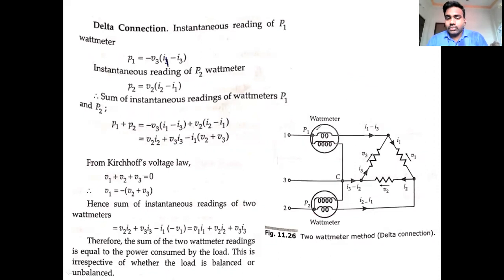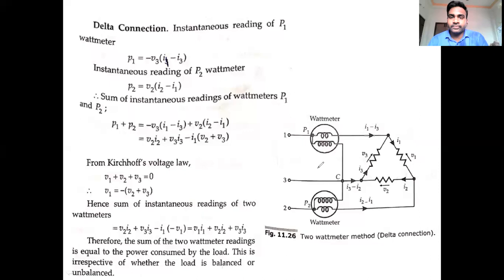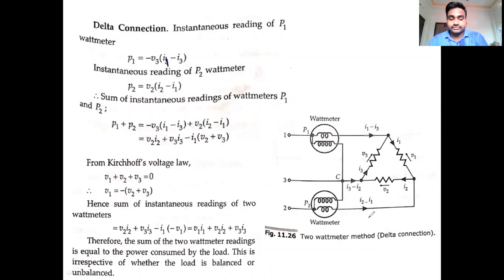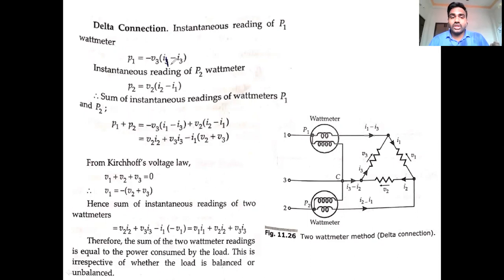In a delta connection, wattmeter 1 is connected to line 1 and wattmeter 2 is connected to line 2. The wattmeter reading for wattmeter 1 is P1 and for wattmeter 2 is P2. The current flowing through line 1 is I1 - I3, through line 3 is I3 - I2, and through line 2 is I2 - I1.